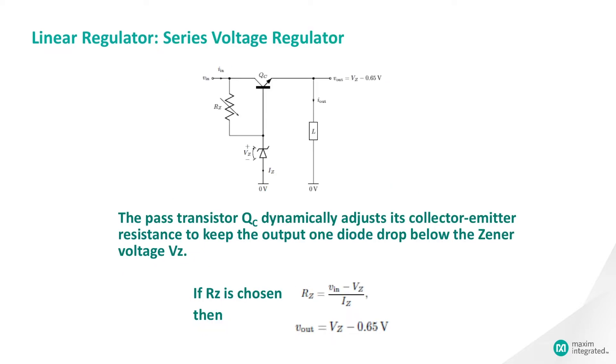Adding an emitter-follower stage to the simple shunt regulator forms a simple series voltage regulator and substantially improves the regulation of the circuit. The PASS transistor, QC, automatically adjusts its collector-emitter resistance to keep the output one diode drop below the Zener voltage, VZ. In other words, QC forms an NPN emitter-follower that buffers the Zener voltage.